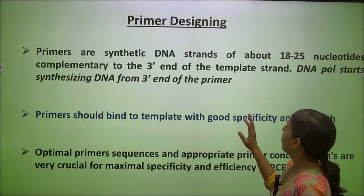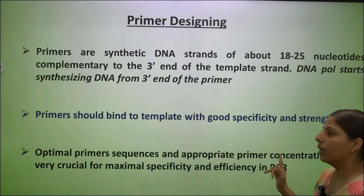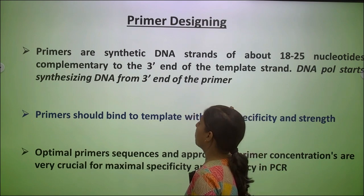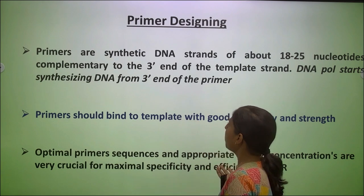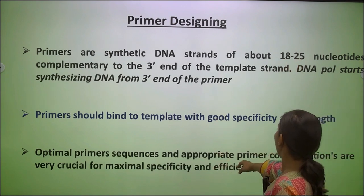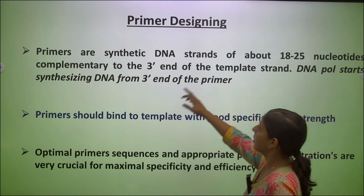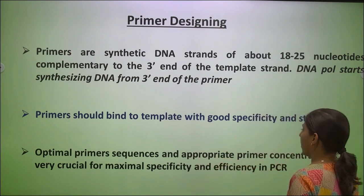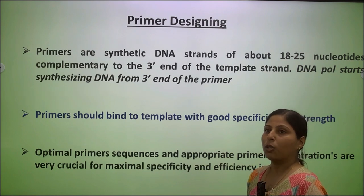For primer designing, primers are synthetic DNA strands of about 18 to 25 nucleotides, complementary to the 3 prime end of the template DNA. The length should not be too short or too long. If too short, they will bind anywhere in the template strand. If too long, no amplification may occur. The length is critical for maximal efficiency, specificity, and strength. DNA polymerase starts synthesizing DNA from the 3 prime end of the primer. Optimal primer sequences and concentrations are crucial for maximum specificity and amplification with lesser error.